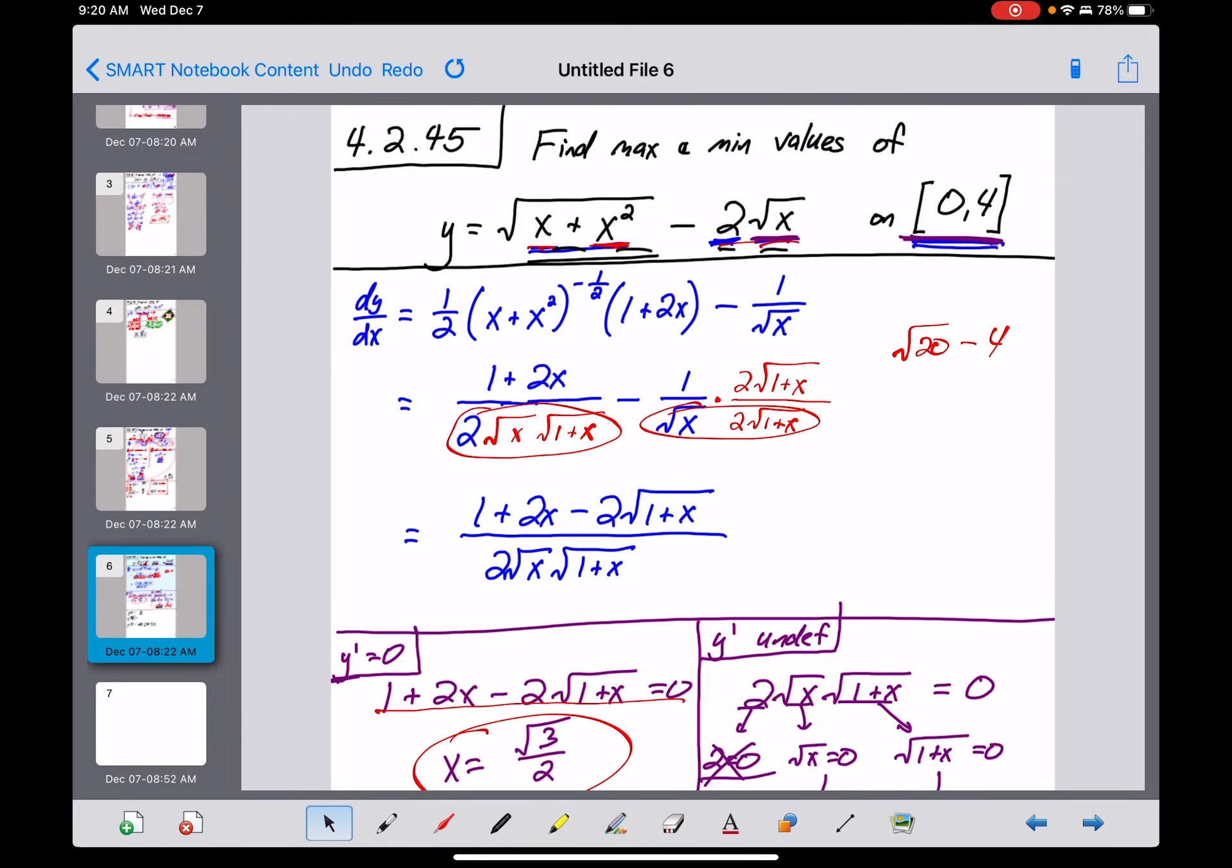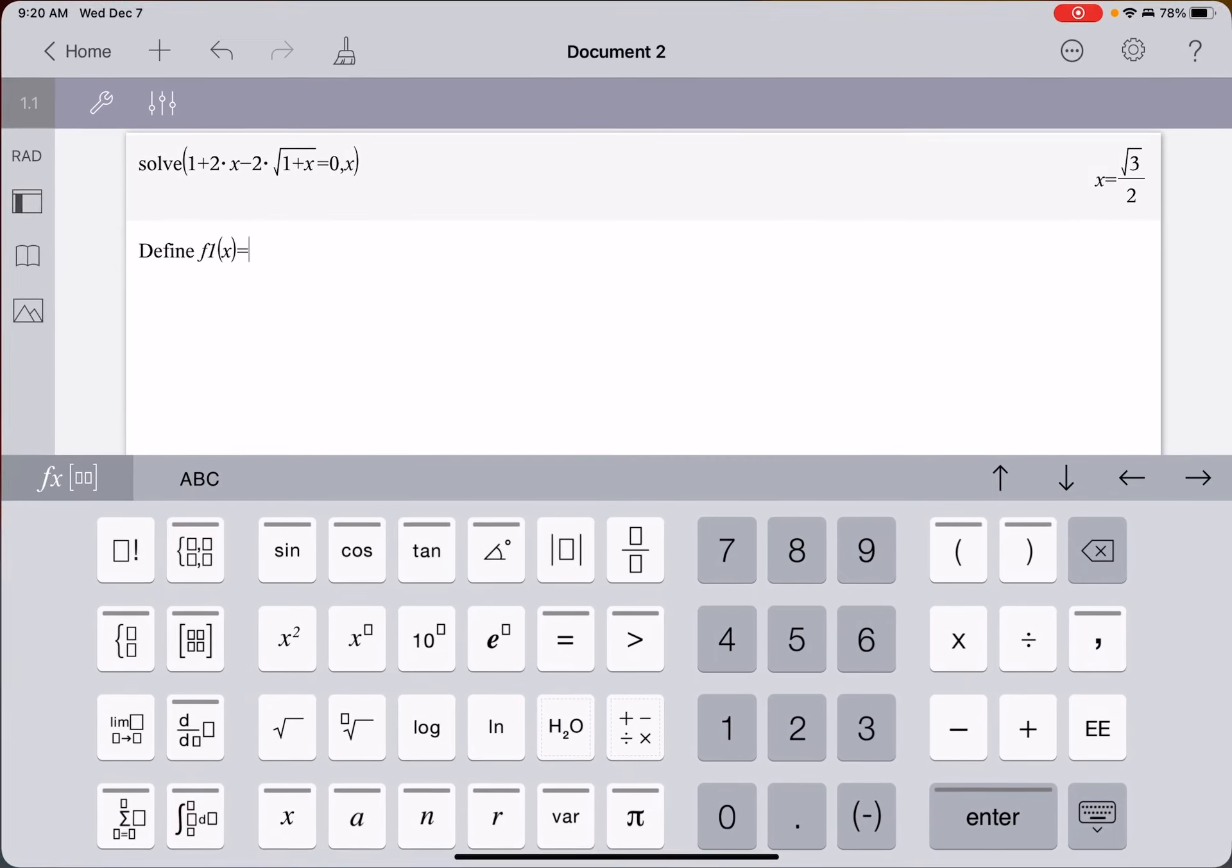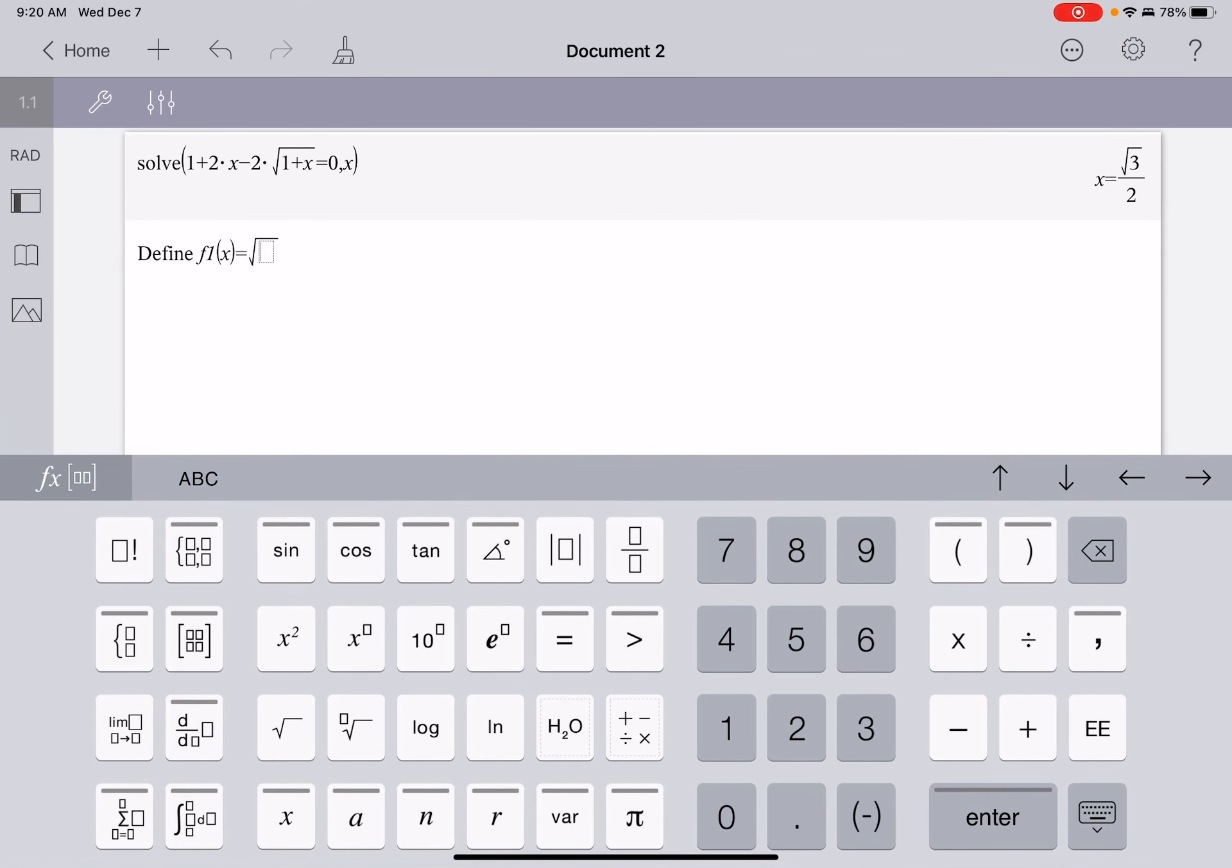X plus X squared and then minus a two root X. So, back to the calculator right here. It was equal to, we had a square root of and an X plus an X squared. Get out of that radical. And then a minus two times the square root of X. So, there's the original function.